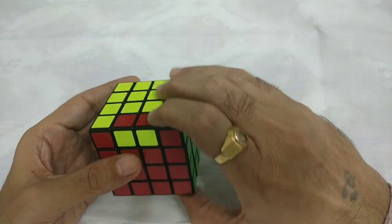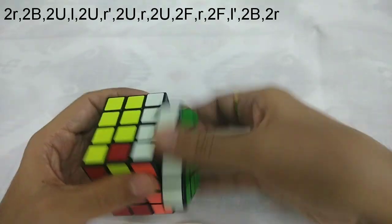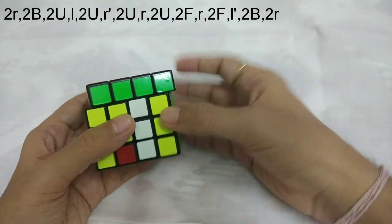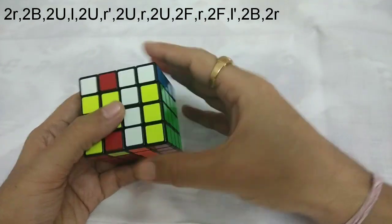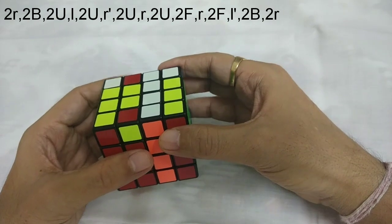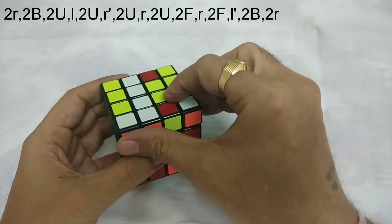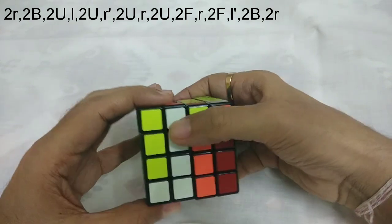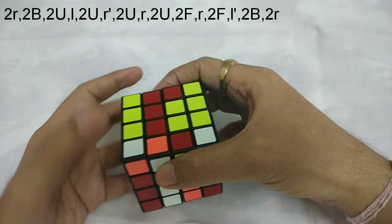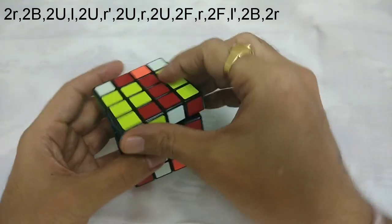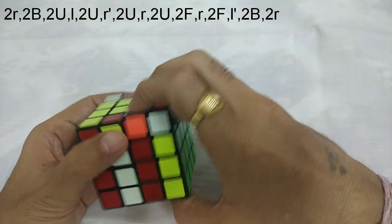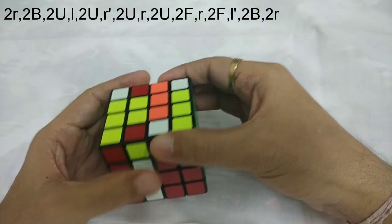So now 2R. So 2B. 2U. L. 2U. R prime. 2U.